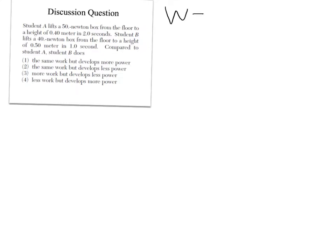If we're finding work and power, we're going to need the work equation, which is F — and if there's an angle between the force and the displacement, cosine theta — times the distance. And power, which is work over time. Since we need work in order to plug it into the power equation, let's do this for both students.